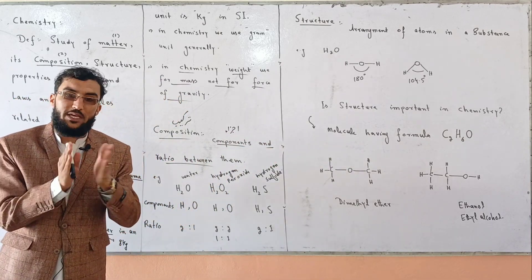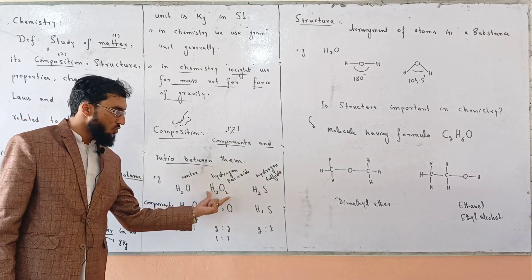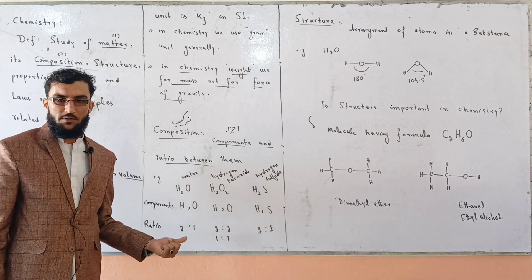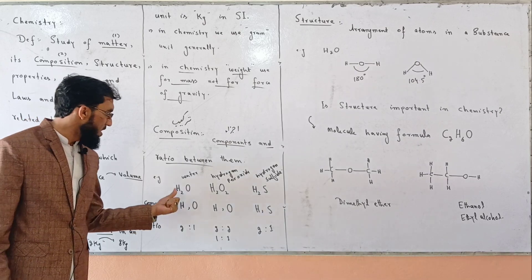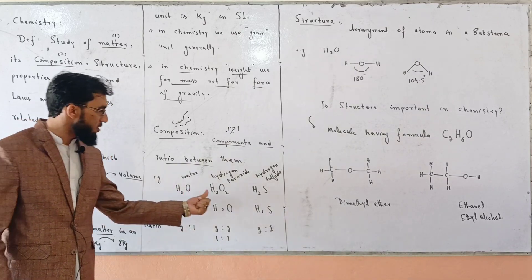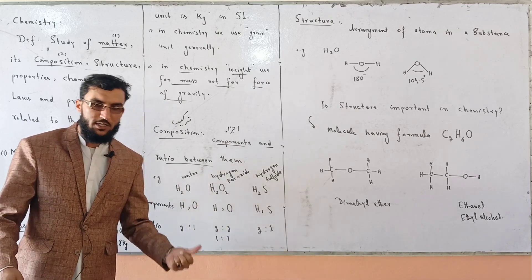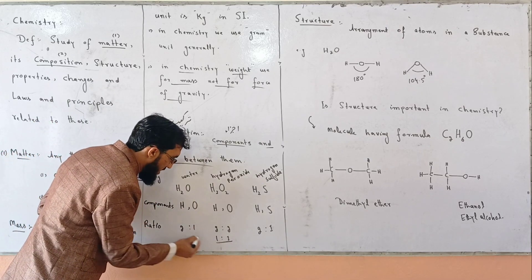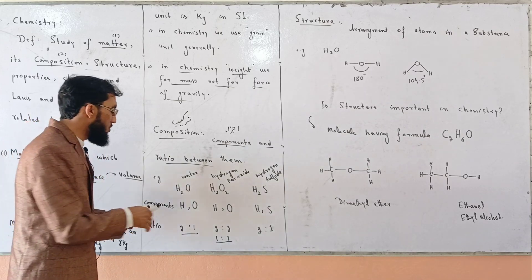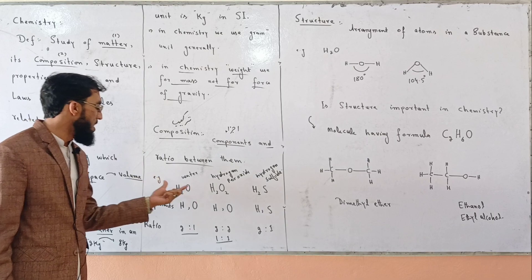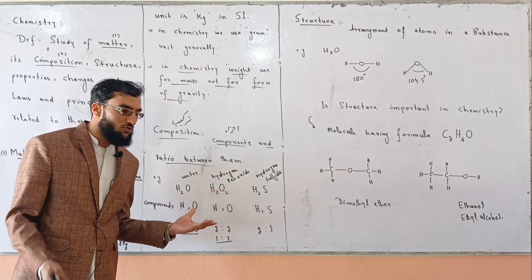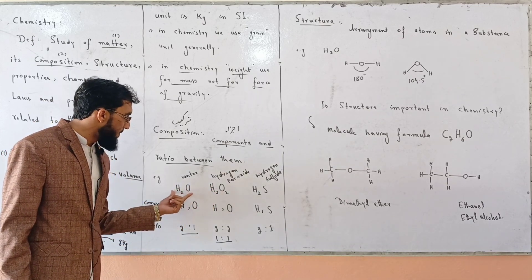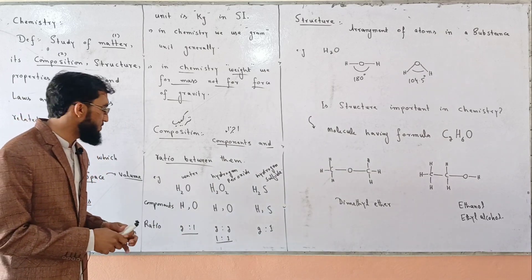For example, H2O and H2O2 — both have the same components: hydrogen and oxygen. The ratio in water (H2O) is 2 to 1 (hydrogen to oxygen), while in hydrogen peroxide (H2O2) the ratio is 2 to 2. The components are the same but the composition differs because the ratio is different. This is how two different compounds can share the same components.